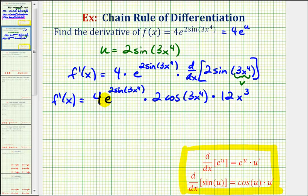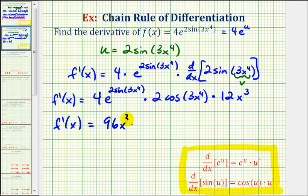So here's our derivative, which required applying the chain rule twice. Let's go ahead and clean this up. We have four times two times twelve x to the third, which is going to be ninety-six x to the third, e to the power of two sine three x to the fourth, times cosine three x to the fourth.